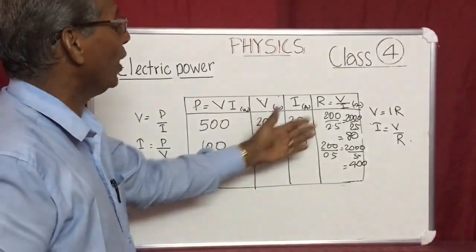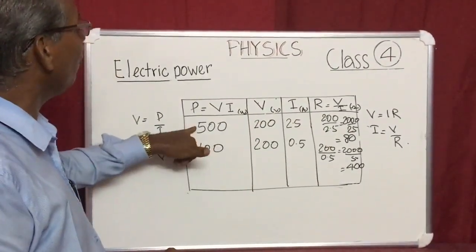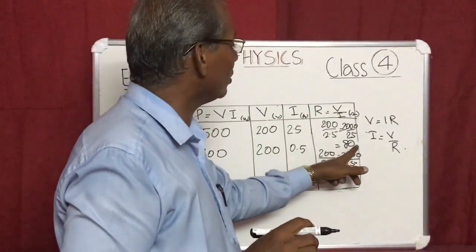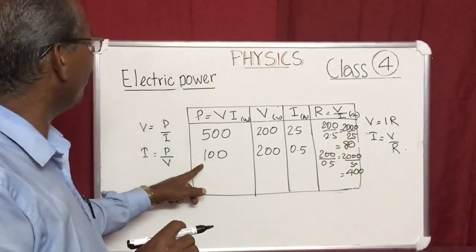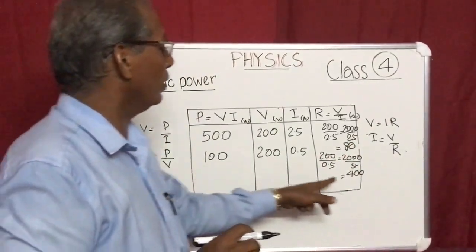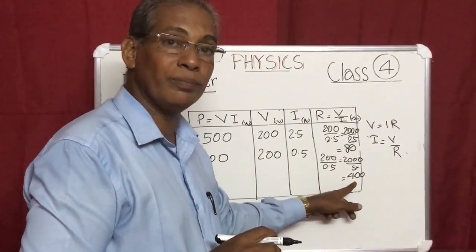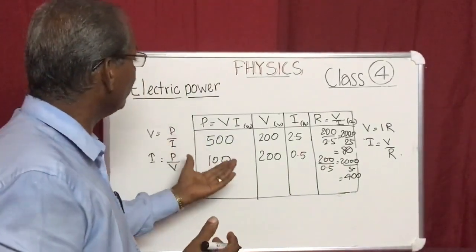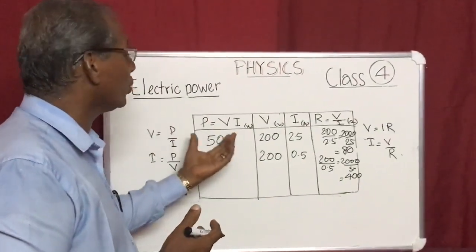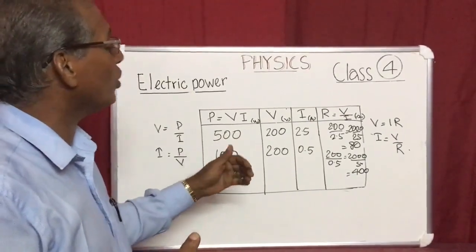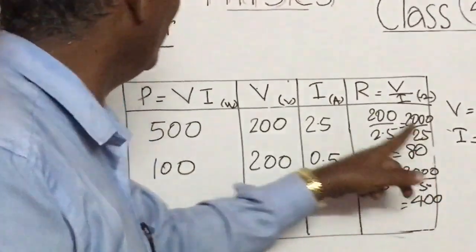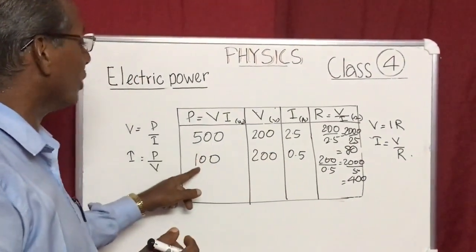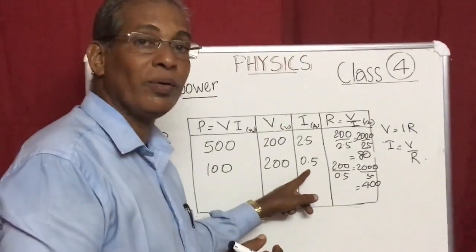Comparing the two: when power is 500W the resistance is 80 ohms, and when power is 100W the resistance is 400 ohms. So we get an inference: if you use a higher wattage device, its resistance will be less but current will be more — here 2.5 ampere for the 500W kettle versus only 0.5 ampere for the 100W bulb.